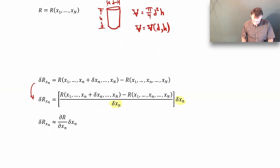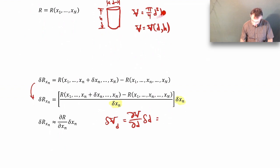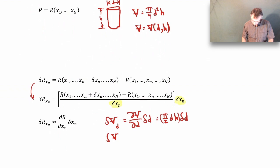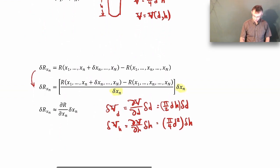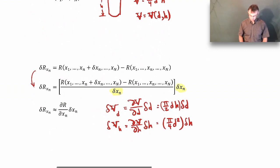Going back to our can example: the uncertainty in the volume due to the uncertainty in the diameter is the partial derivative of the volume with respect to the diameter times the variation in the diameter, which gives pi over 2 times D times H times delta D. Similarly, the variation in the volume due to the variation in the height is pi over 4 times D squared times delta H. This is what that expression looks like for our volume example.